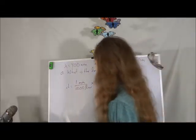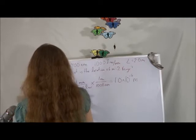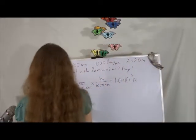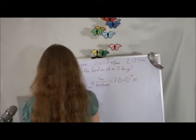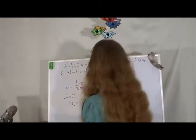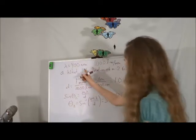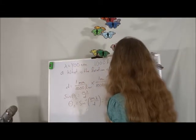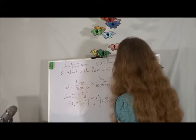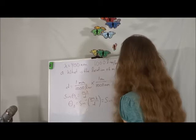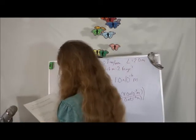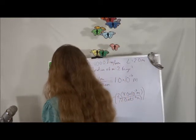Now we have all the information to solve for our angle. Sine theta_2 equals m lambda over d, so taking the arc sine of both sides: theta_2 equals arc sine of (m lambda over d). With m equals 2, lambda equals 4.0 times 10 to the minus 7 meters, and d equals 1.0 times 10 to the minus 6 meters, we get theta_2 equals about 53.1 degrees.